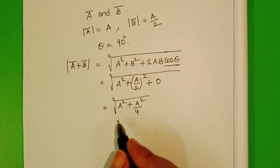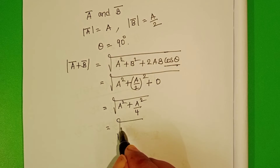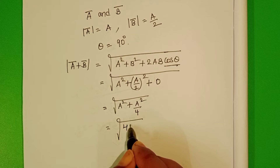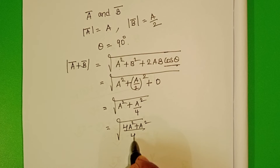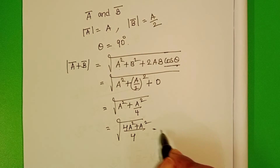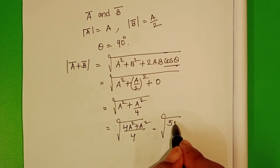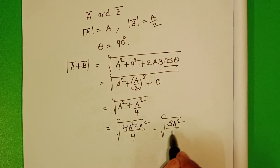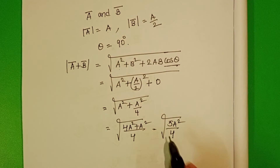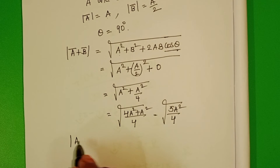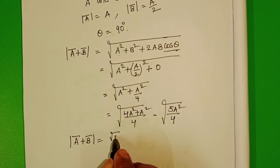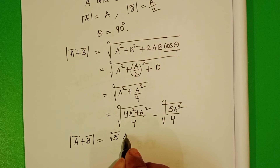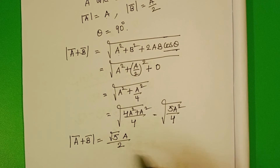Taking LCM as 4, we get the square root of (4A squared plus A squared) by 4, which equals the square root of 5A squared by 4. Therefore, the magnitude of the resultant of the given two vectors is equal to root 5 times A by 2.